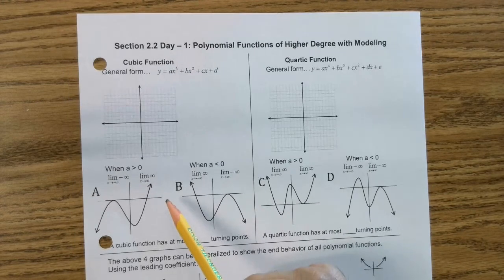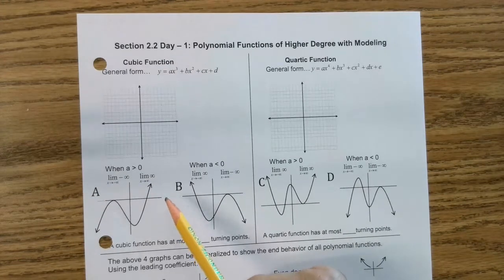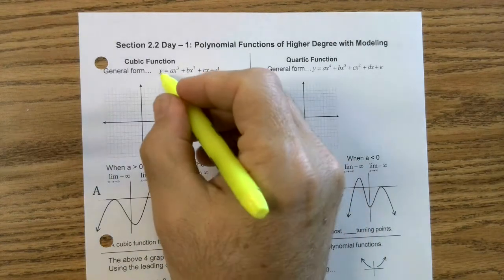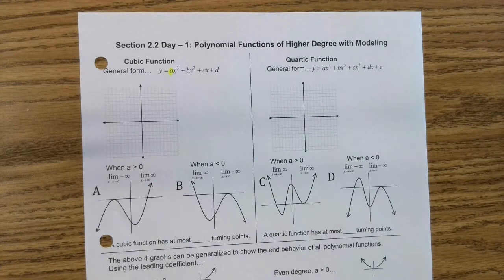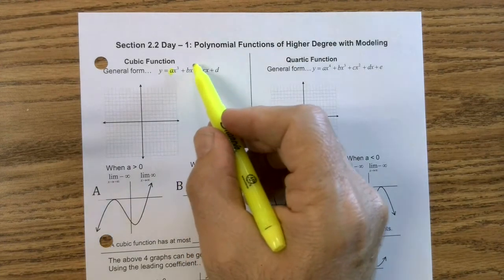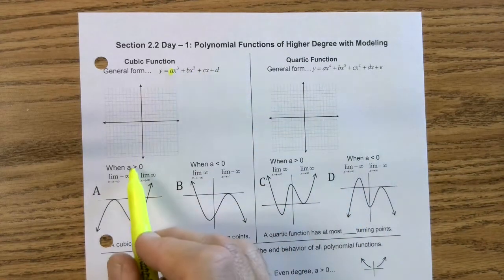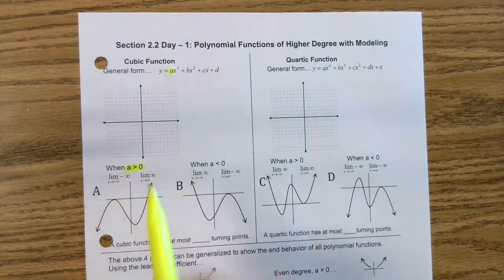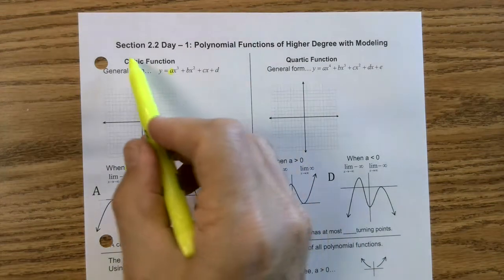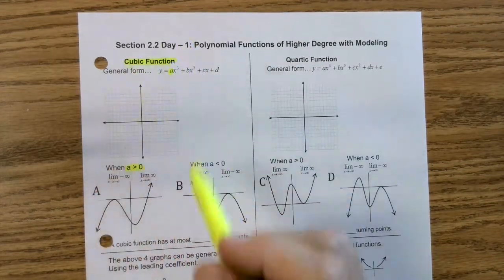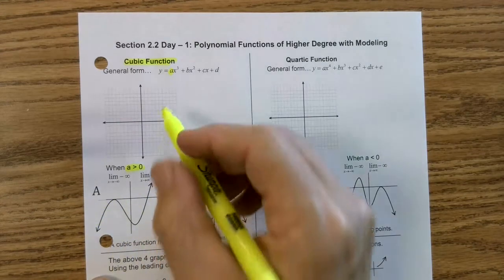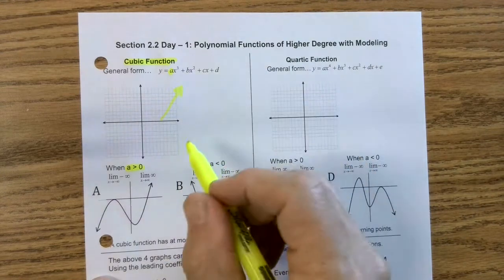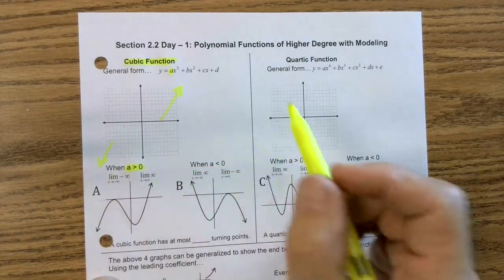So, if you watched my pre-lesson, you got the idea. The only thing I didn't really draw your attention to initially was A is referred to as the leading coefficient because it's the coefficient of the highest powered term. See, this is a 3, 2, 1, none. And when A is positive, your cubic function is going to generally look like this, going up to the right.